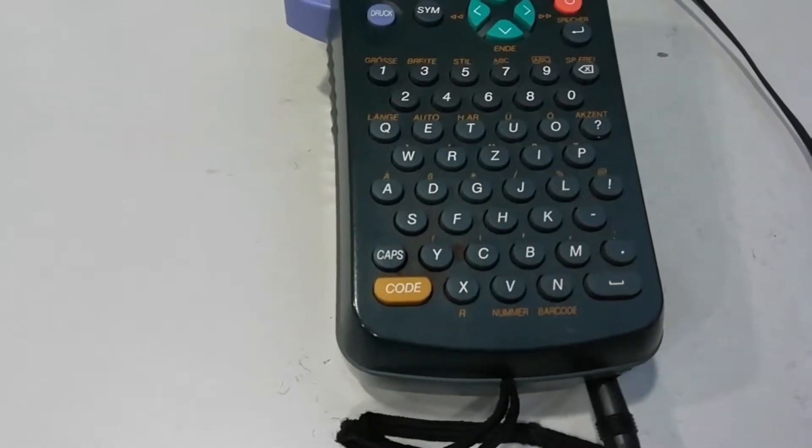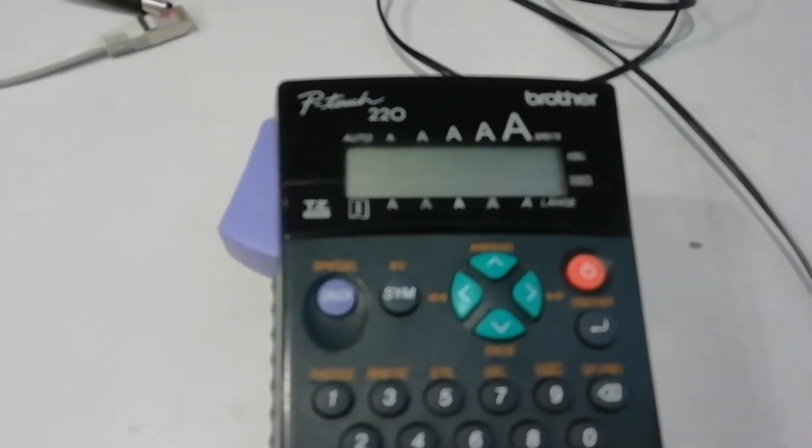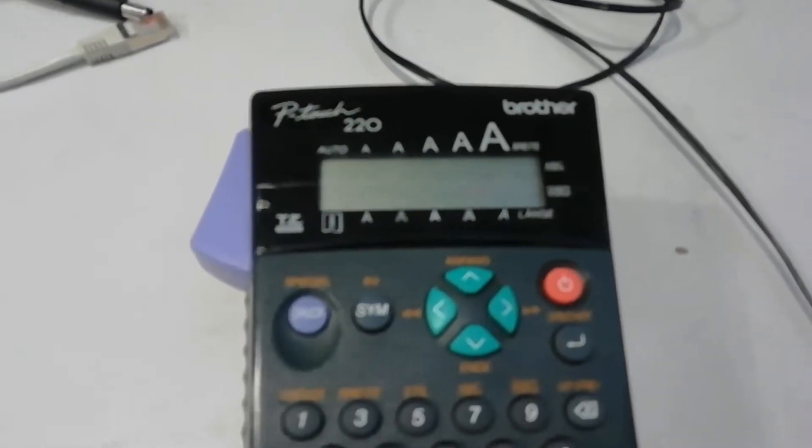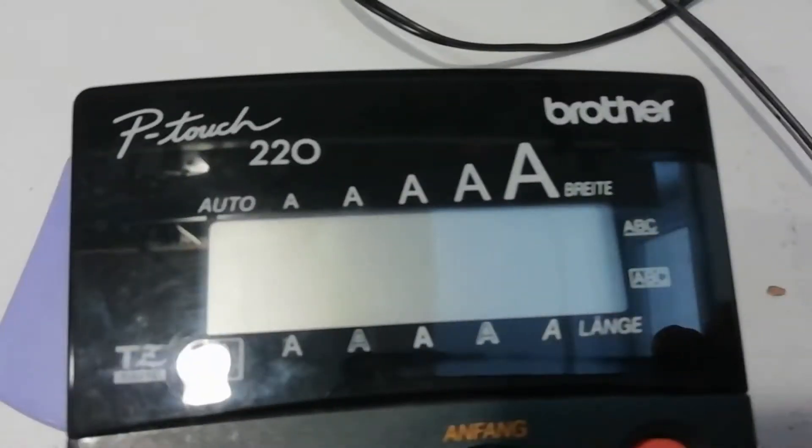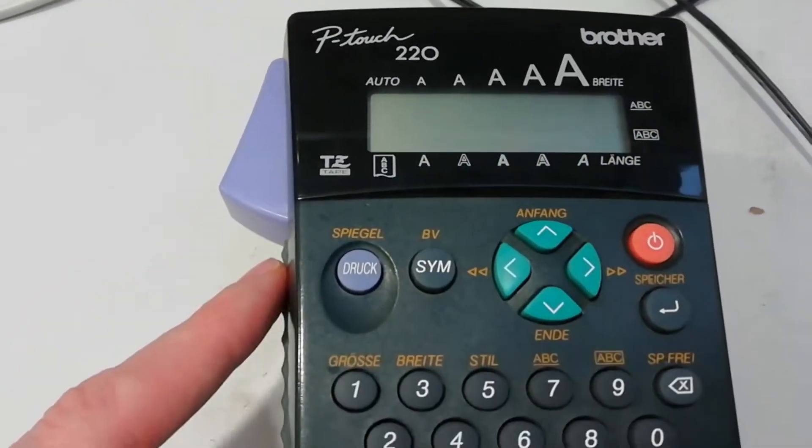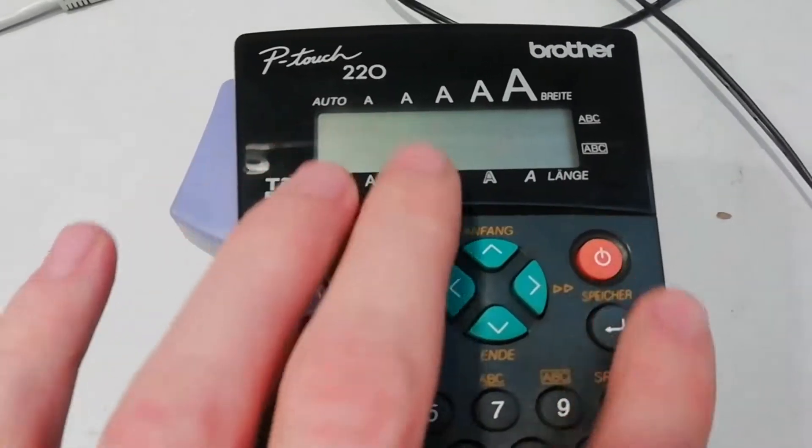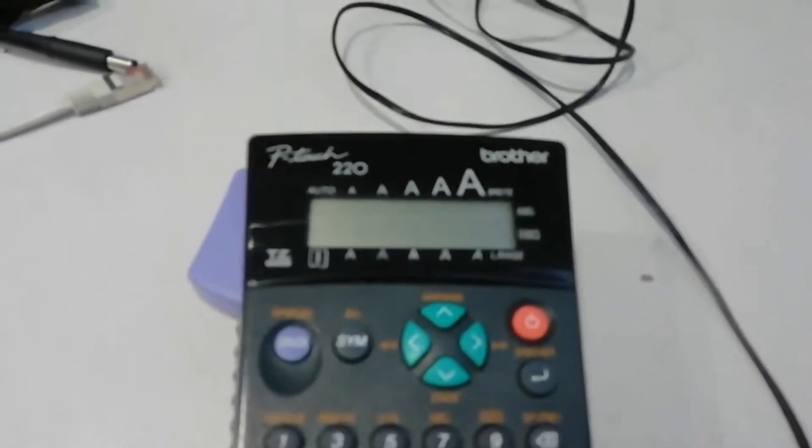Today I would like to show you a nice label maker, P-Touch 220 from company Brother. Looks like this. This button is for cutting. Everything is in German language. Here is power from adapter and back side.